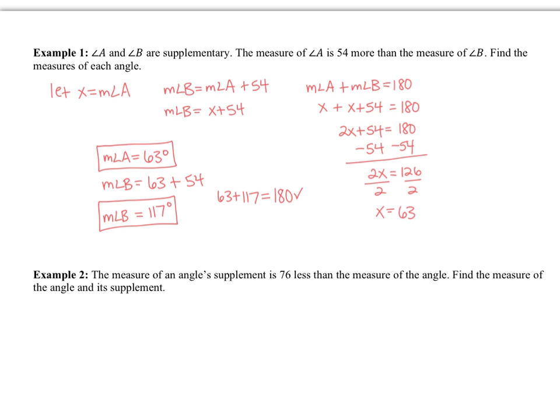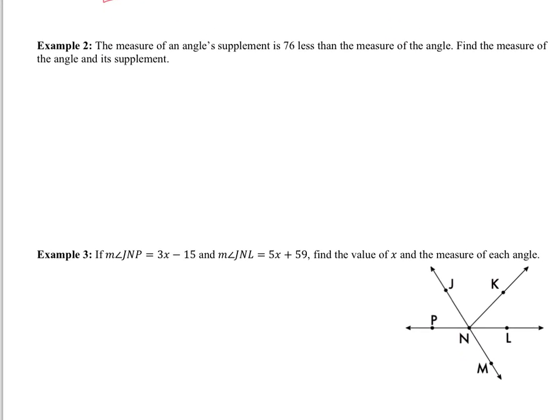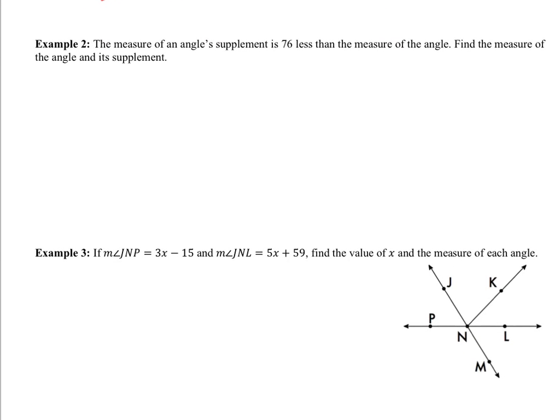Moving on to example 2. The measure of an angle's supplement is 76 less than the measure of the angle. Find the measure of the angle and its supplement. Since we don't have named angles, we need to establish some variables. Let x equal — and you must say measure — the measure of the angle. You can't just say 'the angle'; it must be the measure of the angle.